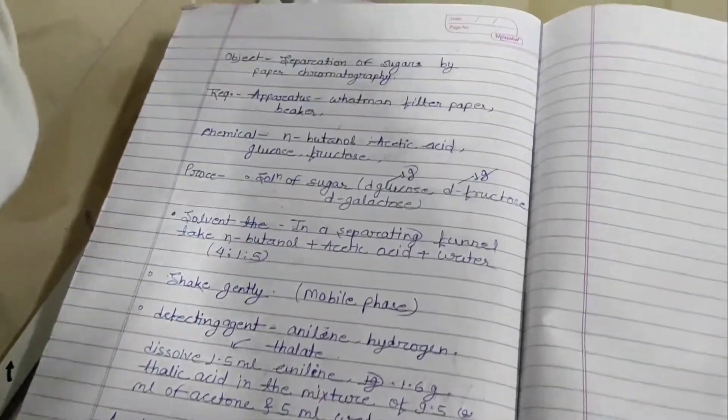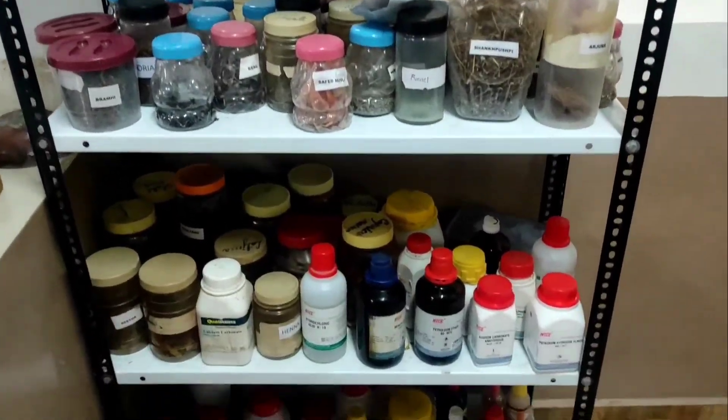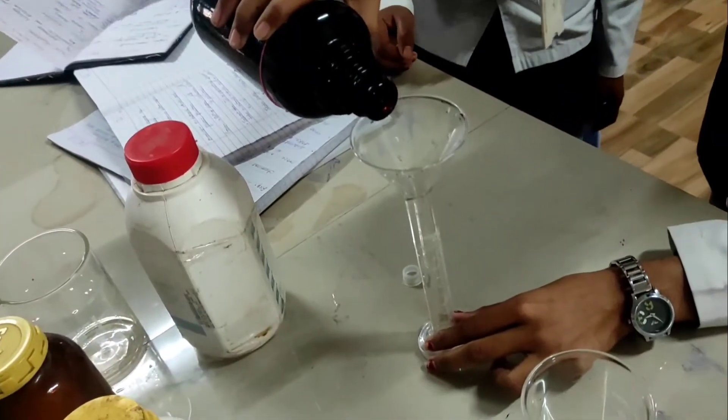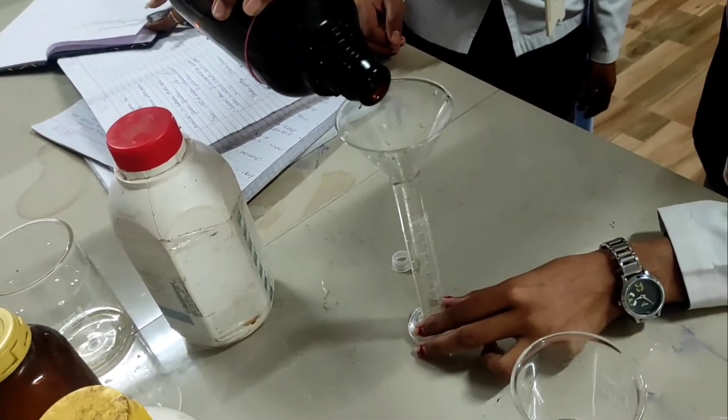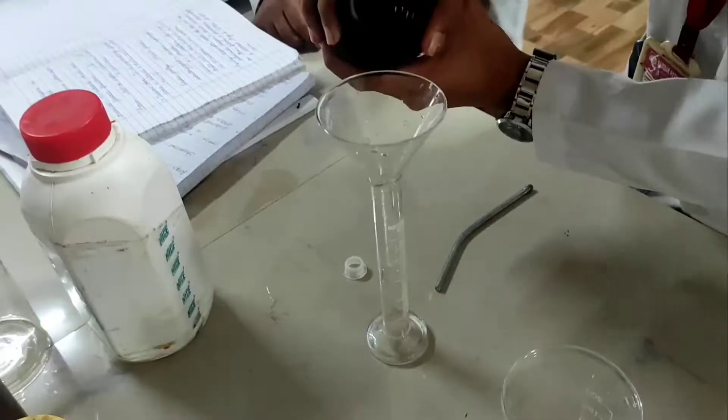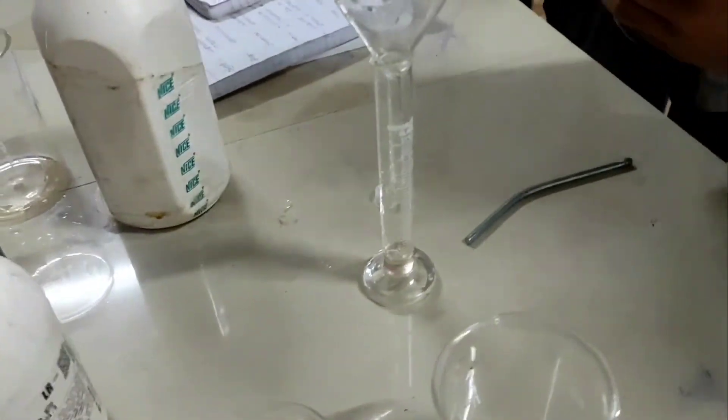Let's talk about the basic requirements to perform this practical. First, what are the chemicals required? For the solvent system, we have to use a mixture of three chemicals in a ratio 4:1:5. The first is n-butanol, acetic acid, and water, a combination of these in the ratio 4:1:5, which can be used as a solvent system for performing this practical.